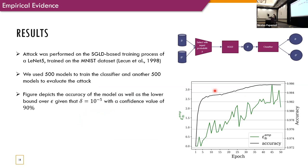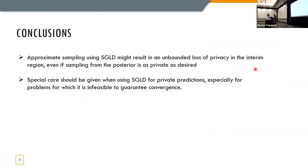Let's look on the results. So, we did this attack on the SGLD-based training process of a LeNet-5 trained on MNIST. And to do that, we trained 500 models to train the classifier, and another 500 models to evaluate the attack on, and actually, another 20, I think, models to create the adjacent data set. And here, we can see the results, and we can see that we get a lower bound of around 3, which allows the classifier to distinguish between the data set with relatively high accuracy.